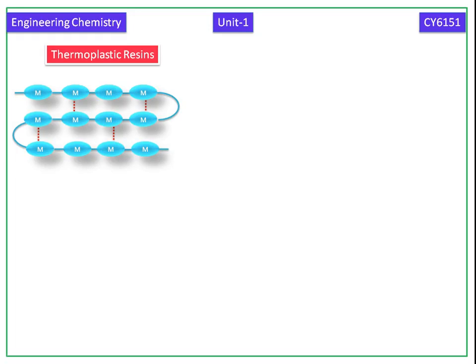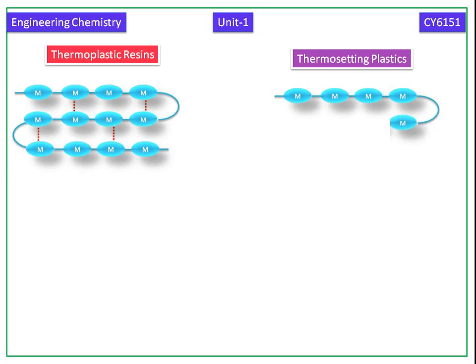They are represented by dotted lines. Thermosetting plastics are not linear chain polymers. They are branched chain polymers. In thermosetting plastics, all the bonds are strong and covalent.